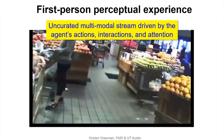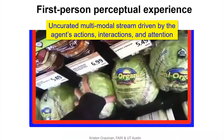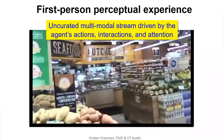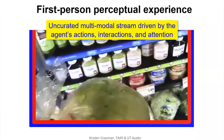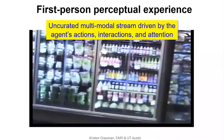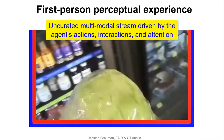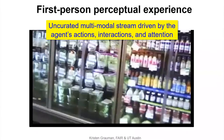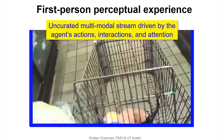There are two sides to thinking about this. One is that certain things are going to be harder and different than the kind of video we're used to processing in computer vision. This includes passively captured, always-on cameras giving uncurated data. It's often multimodal with audio, IMU, and other cues. At the same time, we're getting special insight from this video stream about the agent's actions, interactions, and attention.